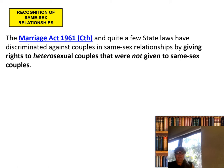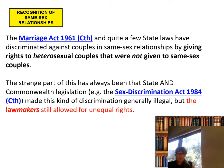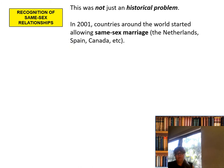When it comes to recognition of same-sex relationships, we'll start with the Marriage Act 1961. Quite a few states have discriminated against couples in same-sex relationships by giving rights to heterosexual couples that were not given to same-sex couples. The strange part of this has always been that state and Commonwealth legislation, for example the Sex Discrimination Act of 1984, made this kind of discrimination generally illegal, yet lawmakers still allowed for unequal rights.